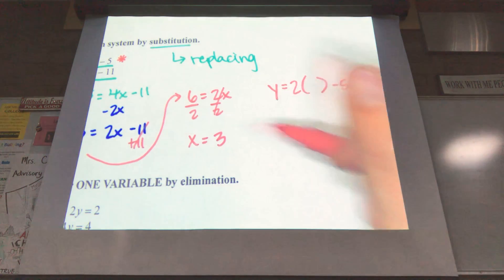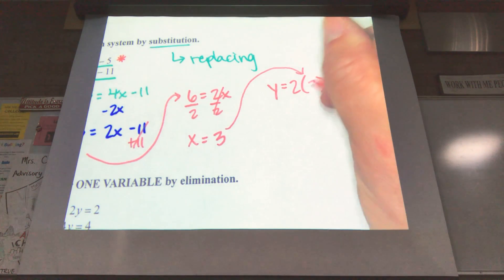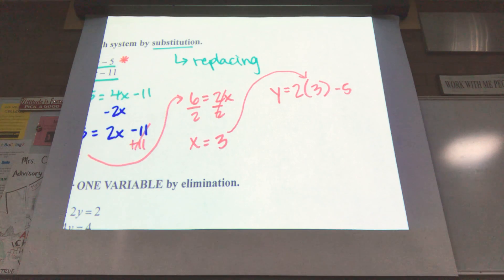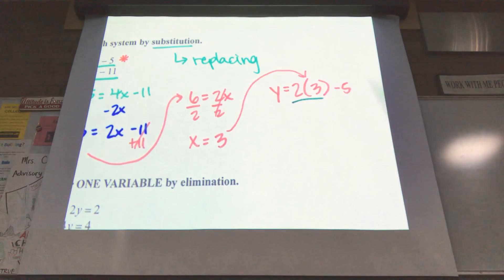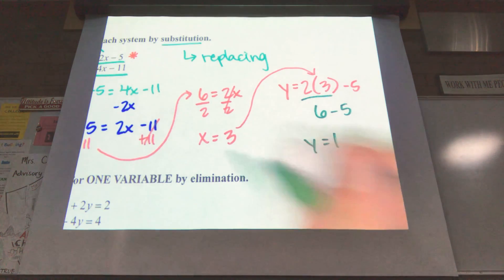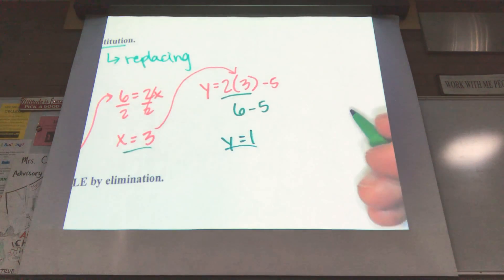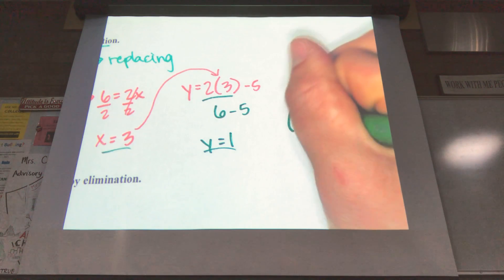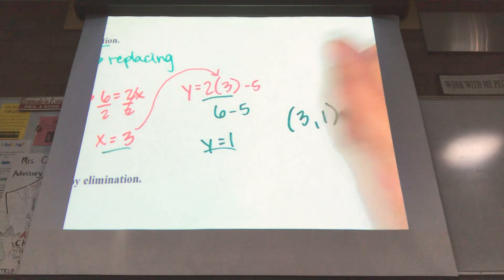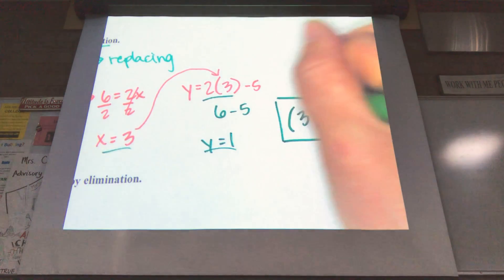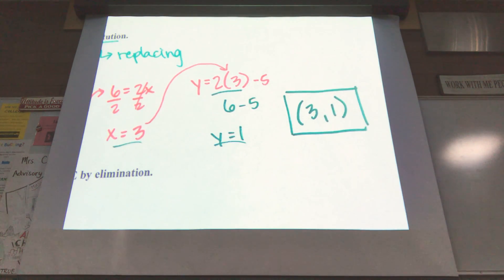Well, we found that x was 3. So substitute that 3, and now we can go ahead and solve. 2 times 3, 6, 6 minus 5, y equals 1. We have both parts, our x and our y, so we can write it as a coordinate point. x is 3, y is 1, and that is our final answer. Final answer should always be a coordinate point.